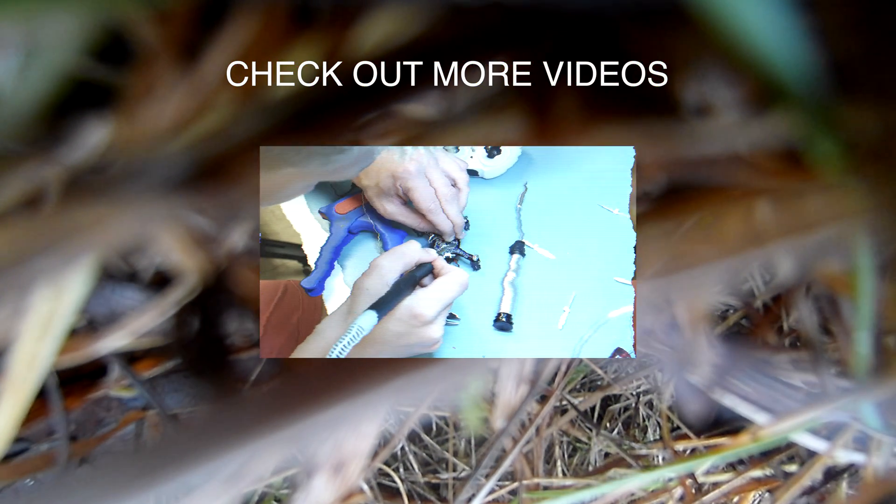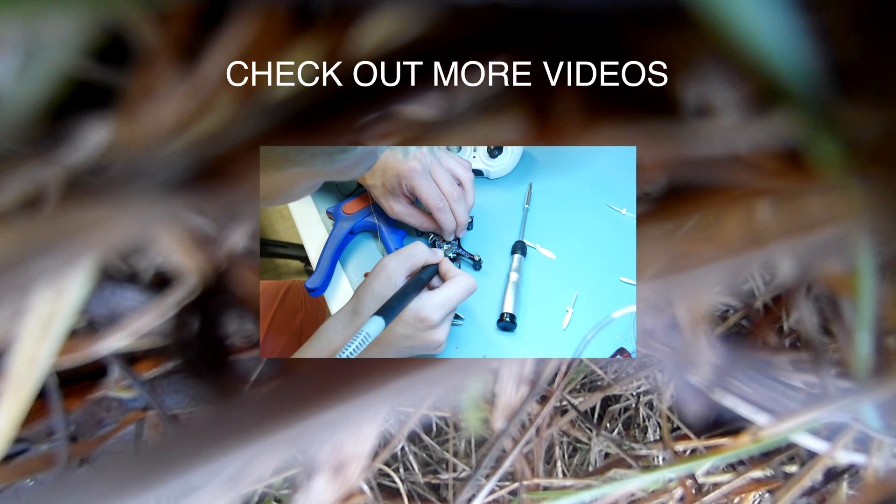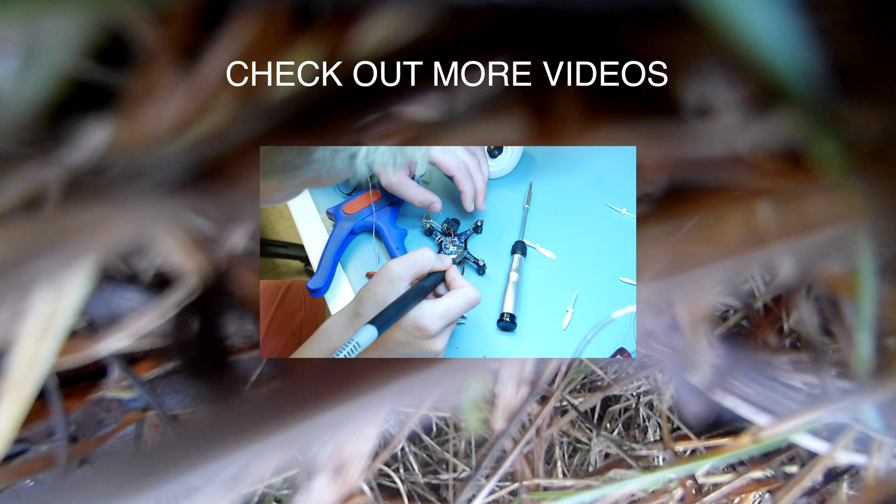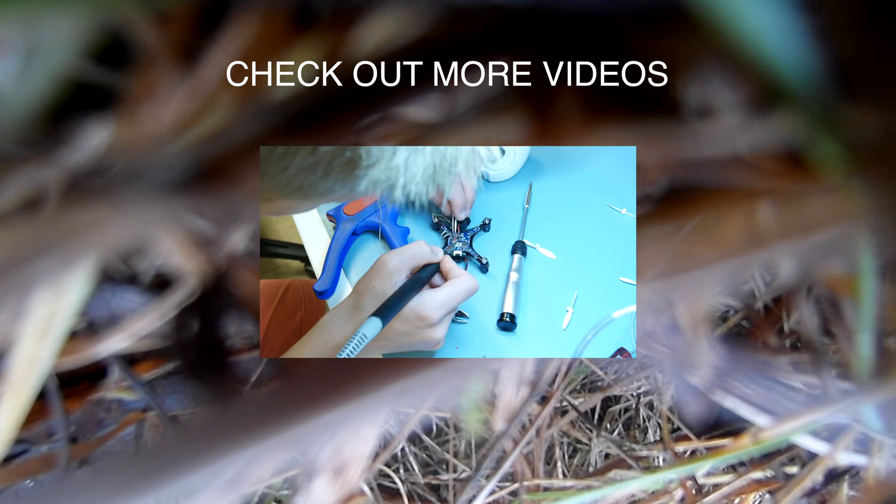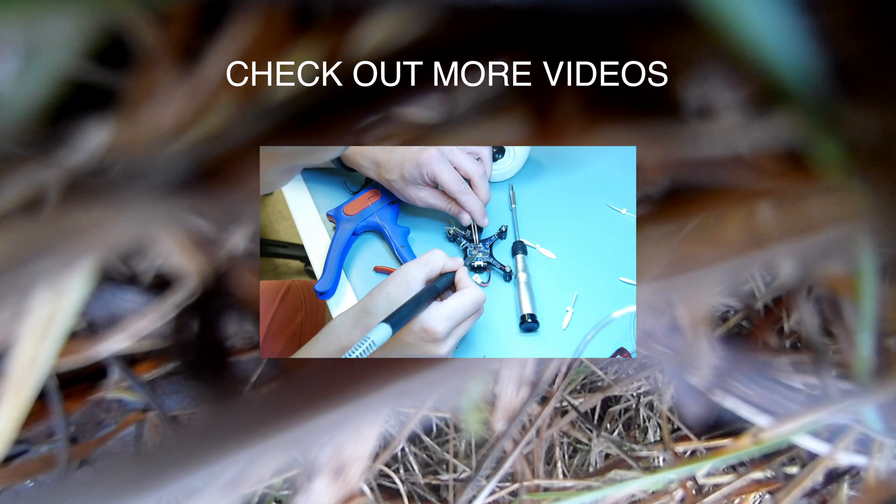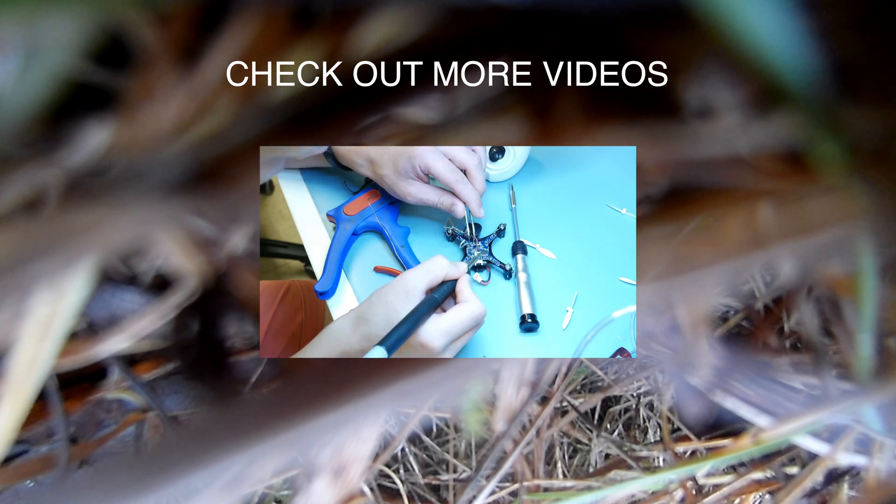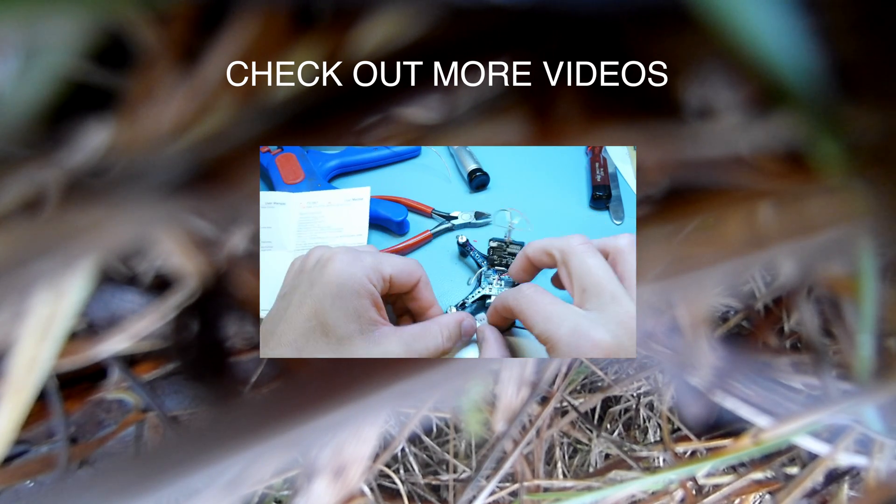Get the polarity correct, otherwise you might blow up your quad or battery. To prevent this, just make sure you locate the red wire from the battery. Make sure you connect that to the red wire from the transmitter. Okay, so now it's time to test the camera.